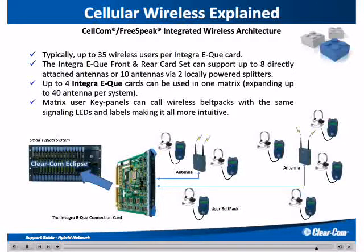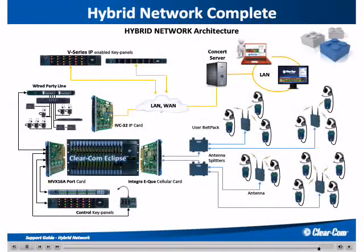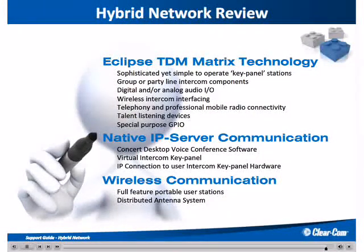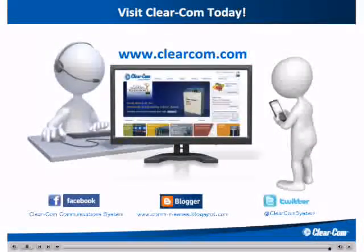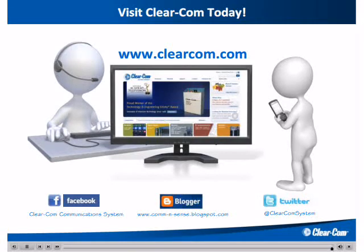Up to four cards can be fitted into one Eclipse frame to accommodate large numbers of wireless users. Functionally, matrix users can talk full duplex to wireless users with signaling and vice versa. This shows the completed hybrid network with all building blocks in place for a very comprehensive intercom system. We see the IP elements at the top of the diagram, the wireless intercom users at the right, and the hardware intercom users on the left. The backbone of the system is the Eclipse matrix, offered exclusively by ClearCom. We thank you for reviewing this presentation. We hope you have found this useful for your application. Detail information is available by visiting us online or calling ClearCom to talk with a regional support person. For more information on these products, visit us at www.clearcom.com. Here you can find datasheets and user manuals. You can also visit us on Facebook, Twitter, and our ClearCom blog.